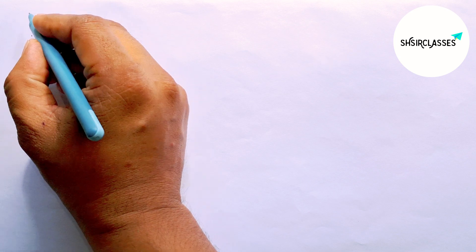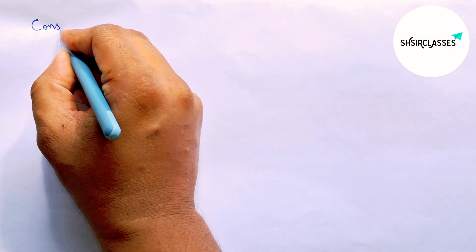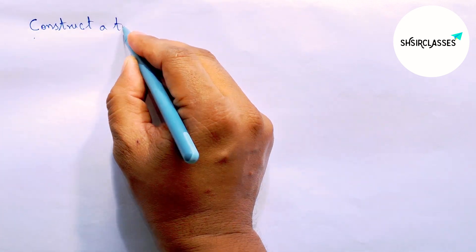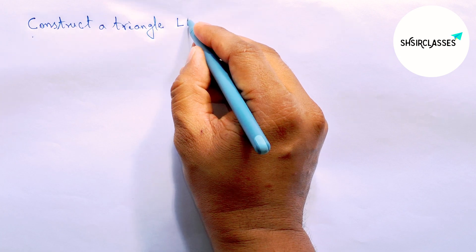Hi everyone, welcome to Sishir Classes. Today in this video, construct a triangle LMN where LM equals 6.2 centimeters.